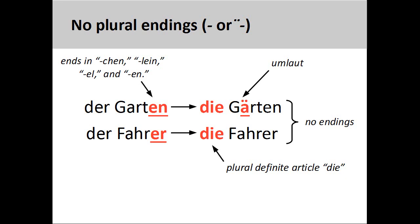The noun Garten, garden, adds an umlaut in the plural, Gärten, whereas another noun, Fahrer, driver, does not. You will note that the definite article of all plural nouns is always die.